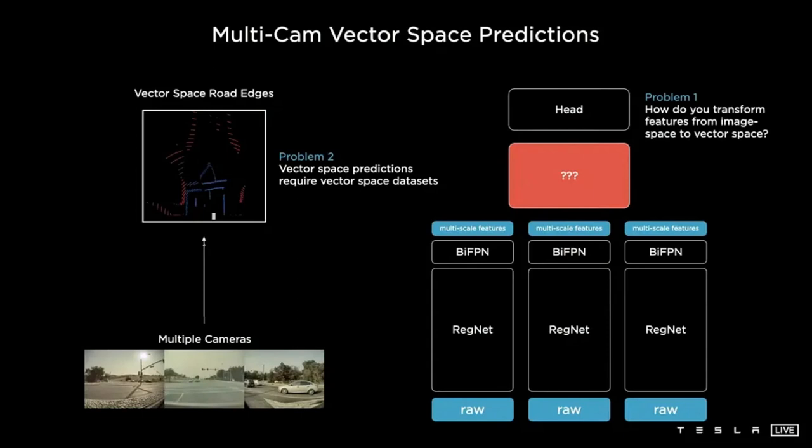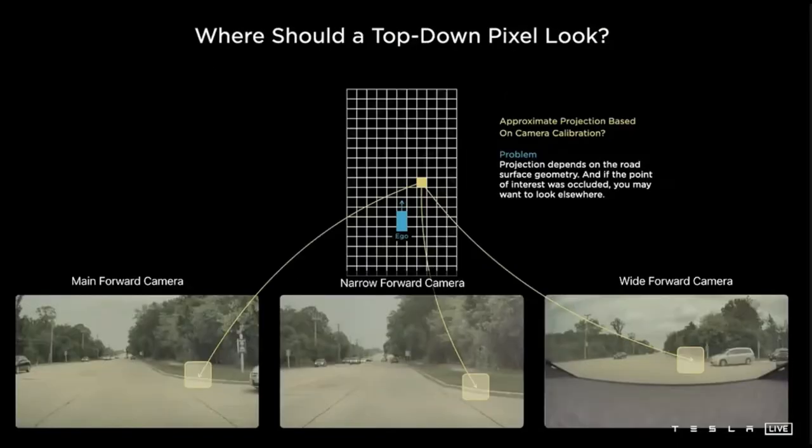In Tesla practice, as shown in the example above, the process of using a transformer to convert image space to vector space can be briefly summarized as the following steps. Initialize a raster of the size of the output space, output space raster. Positional encoded the points on the output space raster. Next, get encoded with a multi-layer perceptron (MLP), into a set of query vectors. For example the yellow point.